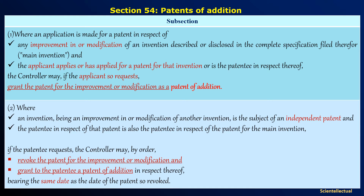So the patentee has one invention which has already been granted. Now he improves or modifies it, which can itself be an independent patent. Now if the patentee requests the controller, the controller may revoke the independent patent and grant the improved or modified patent application having the same date as the revoked patent.